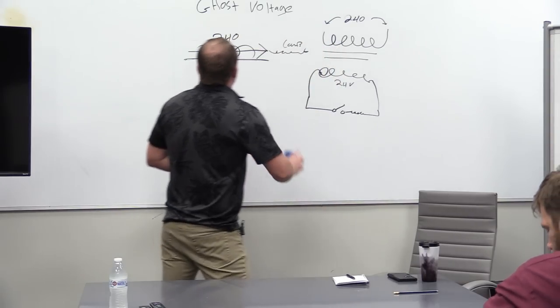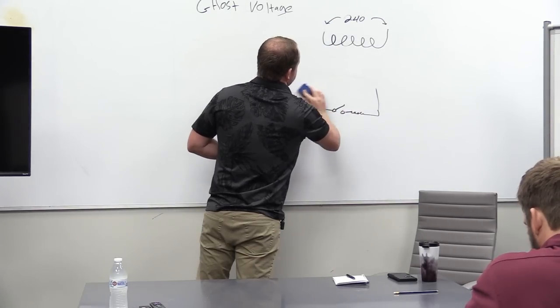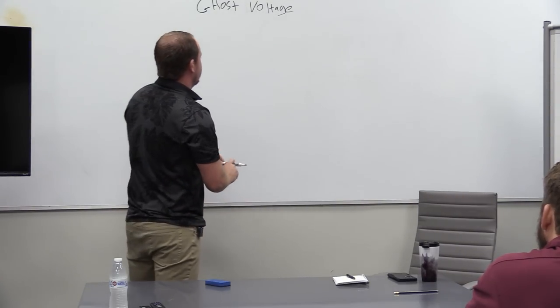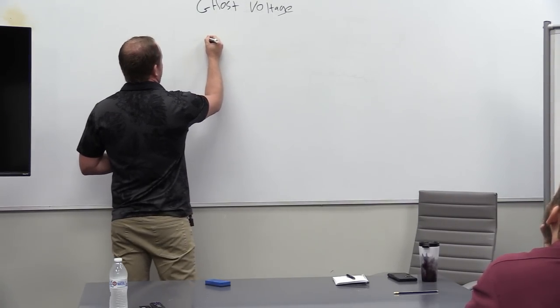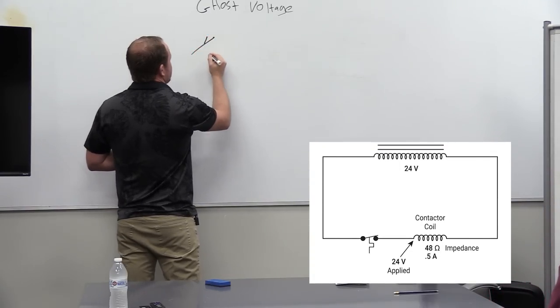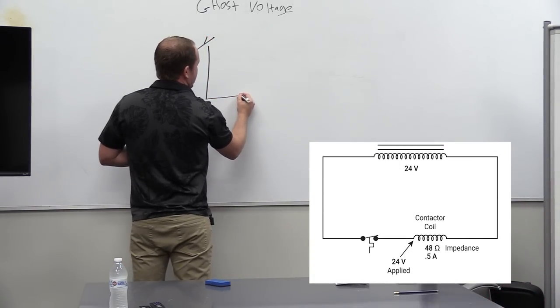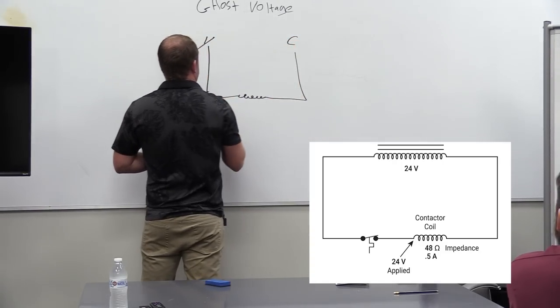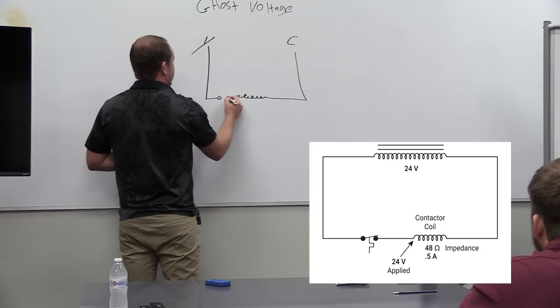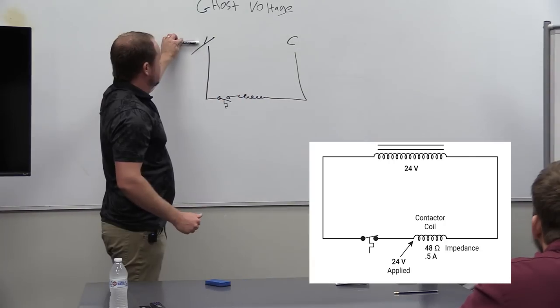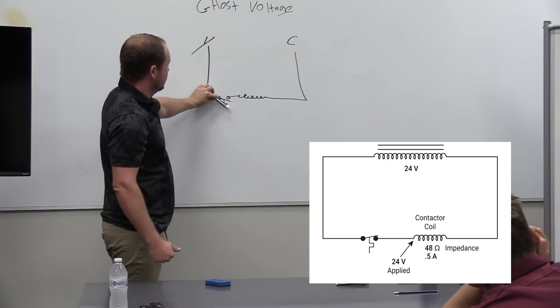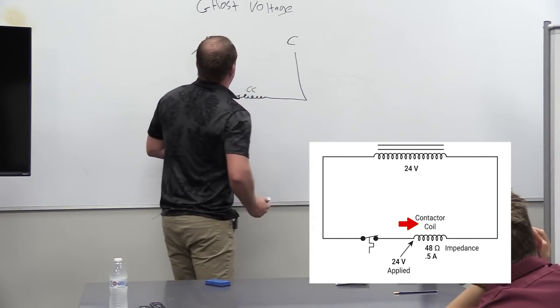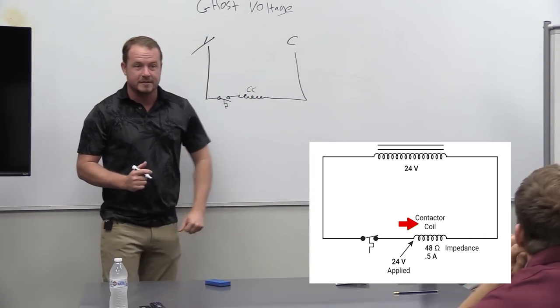But there's another reason why we see ghost voltage, and it's actually a more common reason. We'll draw a really basic circuit here. So we're going to call this our Y circuit. This is our Y circuit. And then it goes back over to common. We'll draw a switch in here. This is our thermostat. Call for cool, right? When there's a thermostatic call for cool, the temperature increases, causes the switch to close, which then energizes our contactor coil, right? And our contactor coil is connected in between Y and C.